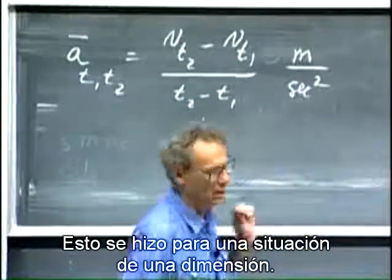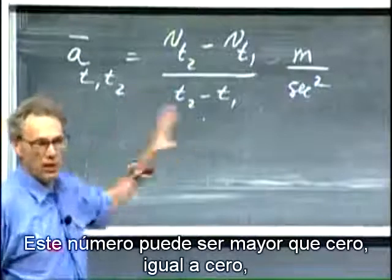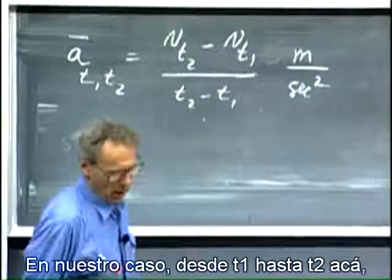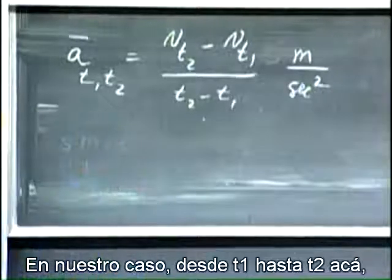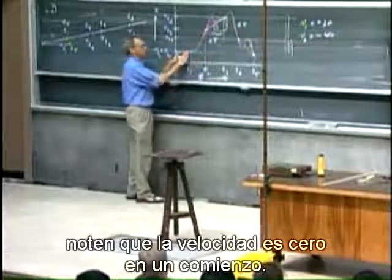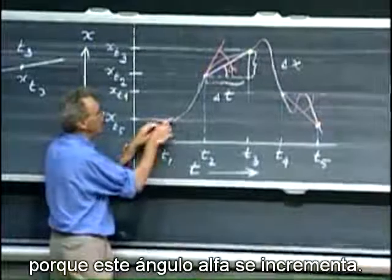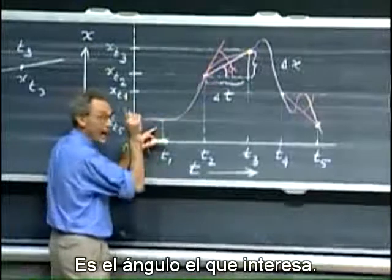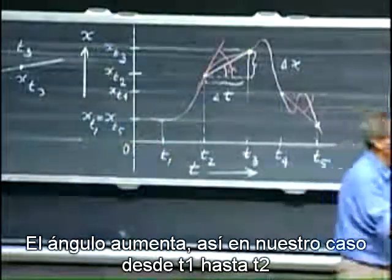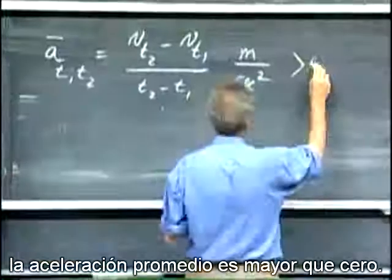This is for a one-dimensional situation. This number can be larger than zero, equal to zero, or smaller than zero. In our case, from t1 to t2, notice the velocity is zero at the start and begins to increase because the angle alpha increases. The angle is what matters. The angle increases, so from t1 to t2, the average acceleration is larger than zero.